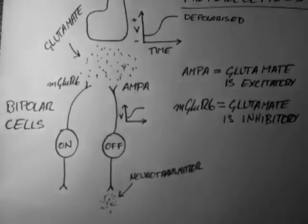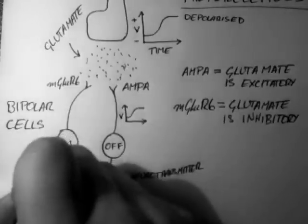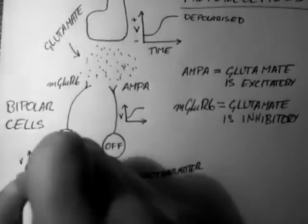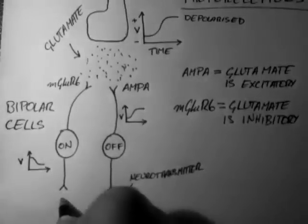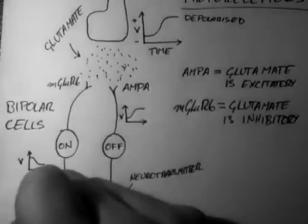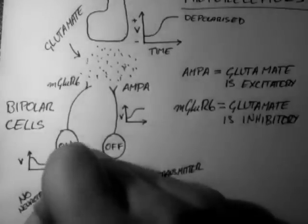However, in the on cell, glutamate is inhibitory, so it gets hyperpolarized in response to glutamate. Therefore again, according to rule number one, nothing happens at the end of the axon. That is, no neurotransmitter is released.